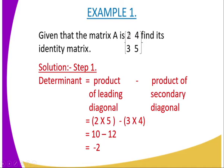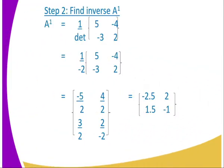The leading diagonal and secondary diagonal are as explained in previous lessons. The product of the leading diagonal is 2 × 5 = 10. You subtract the product of the secondary diagonal, which is 3 × 4 = 12. Therefore, 10 minus 12 gives negative 2 as our determinant.